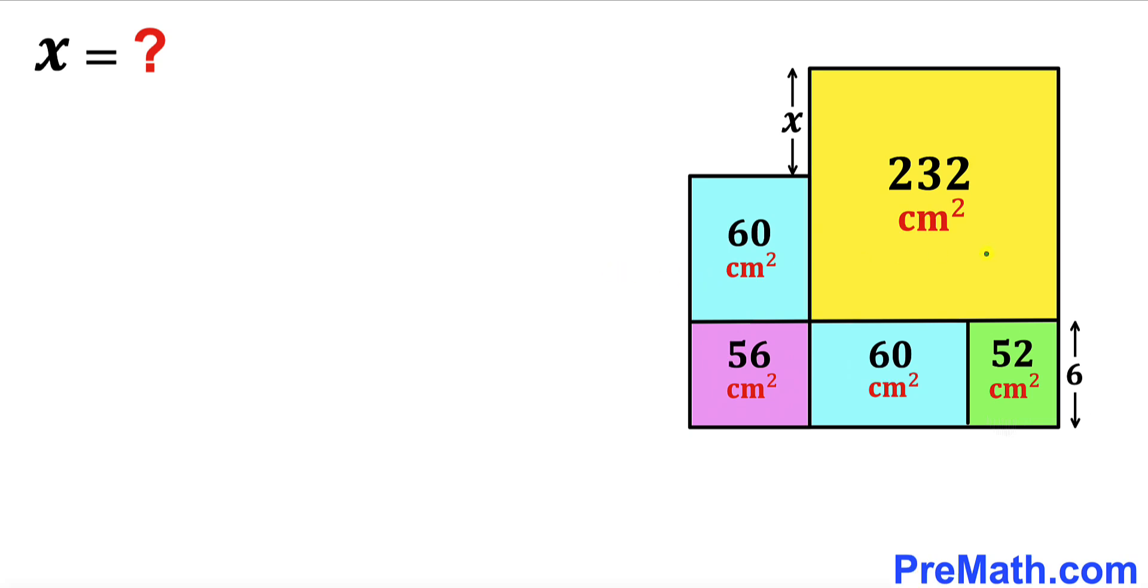Welcome to PreMath. In this video we have got these bunch of rectangles put together as you can see in this diagram such that the area of this green rectangle is 52 centimeter square.